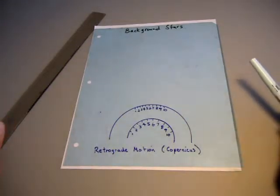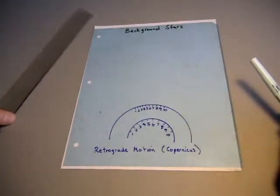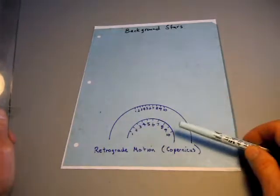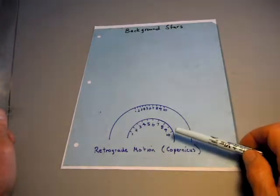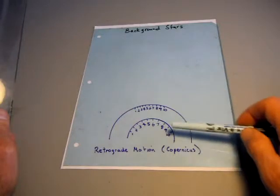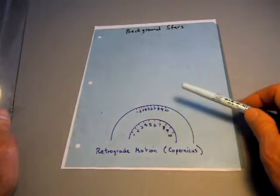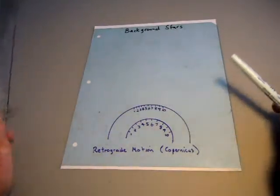Old school simulation of retrograde motion according to Copernicus. The small circle is the Earth's orbit. The numbers are different times of the year. At those same times, a planet that's further away goes around the larger circle and is at those locations.